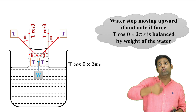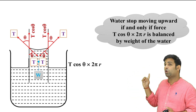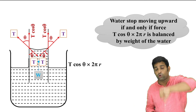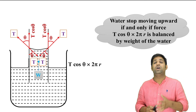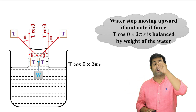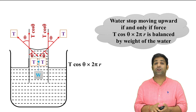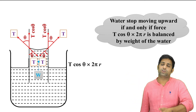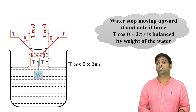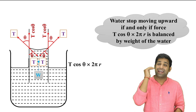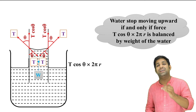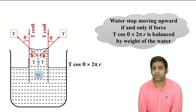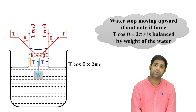The upward force is T cos theta into 2πr acting along the whole circumference. The weight of the liquid column acts downward. When the weight equals the upward surface tension force, the liquid stops rising and attains an equilibrium height h.